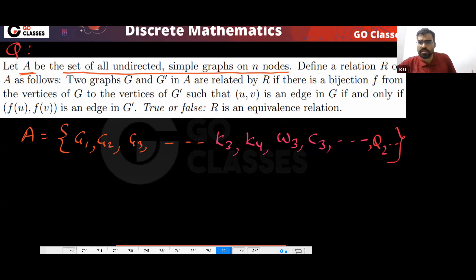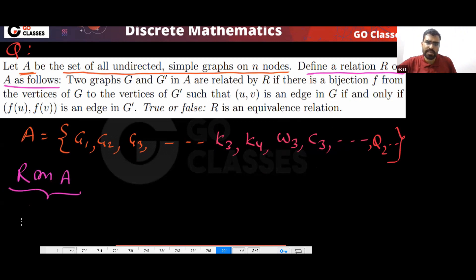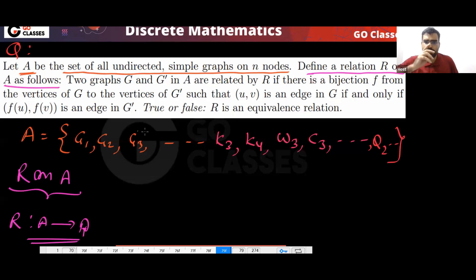Now, what this is saying is that we are defining a relation on A. Relation on A means we are relating the elements of A to elements of A — that is, graphs are related to each other. Two graphs are related to each other.